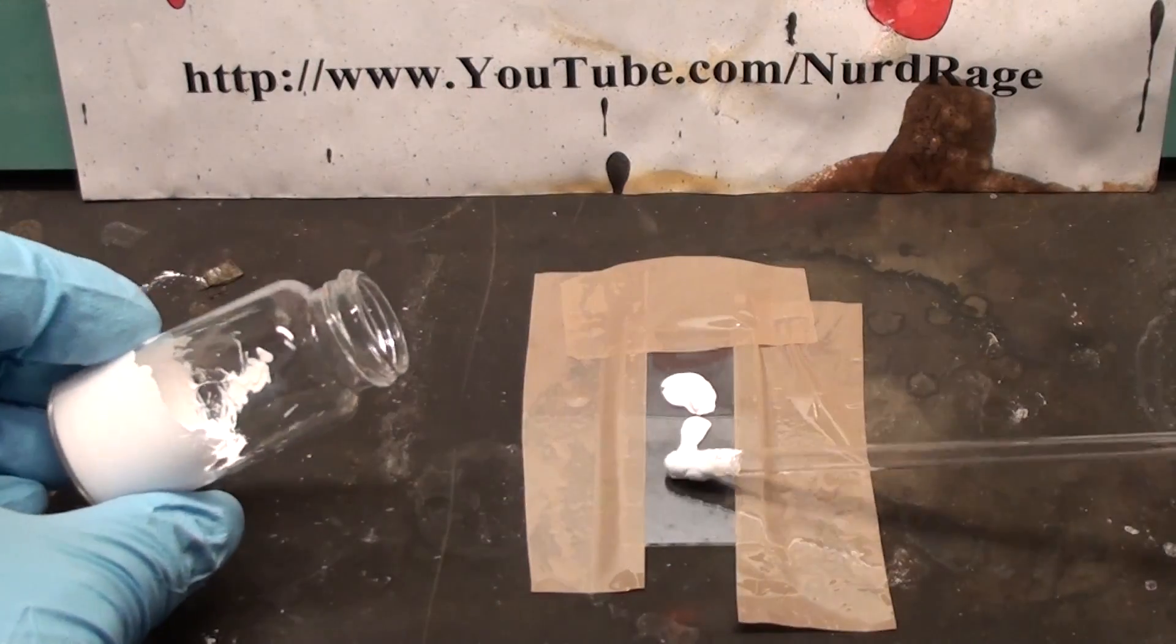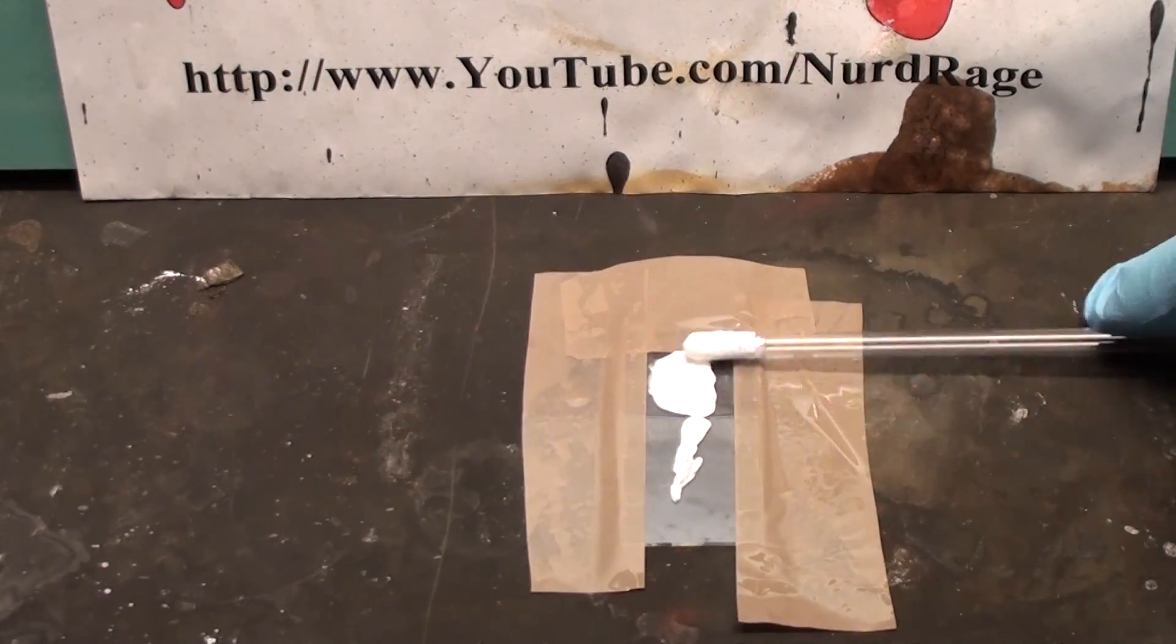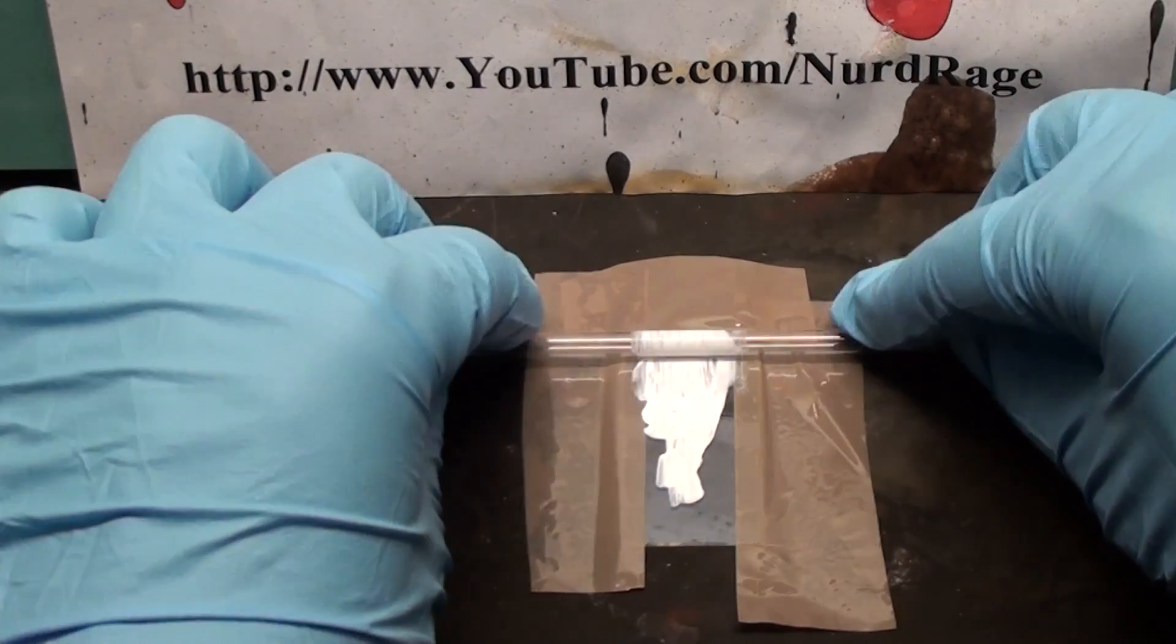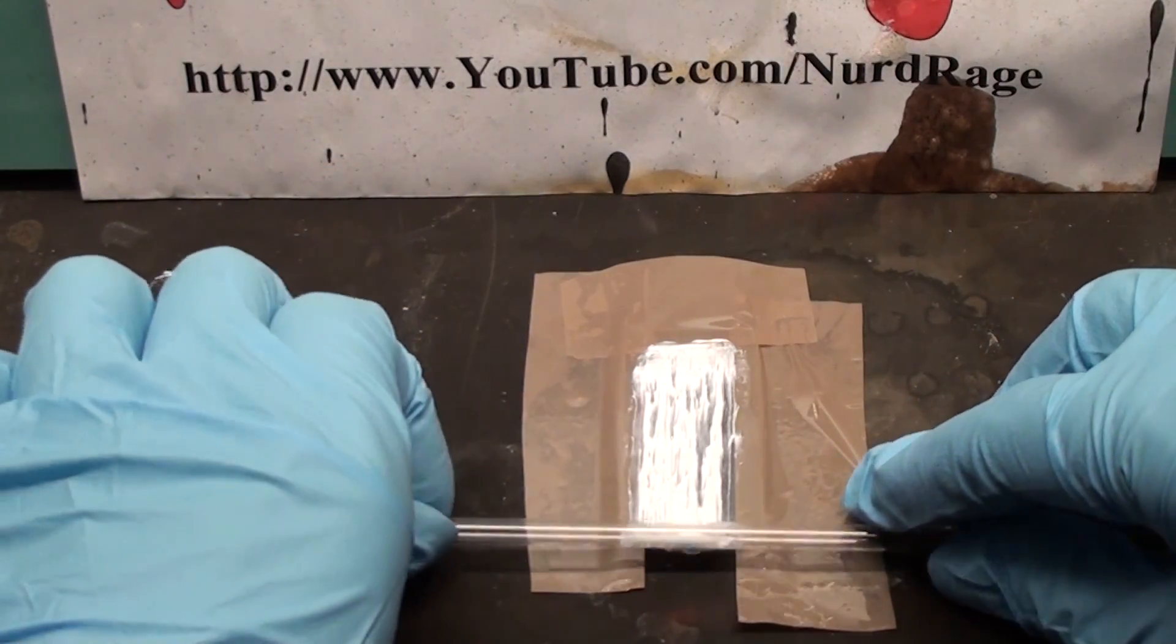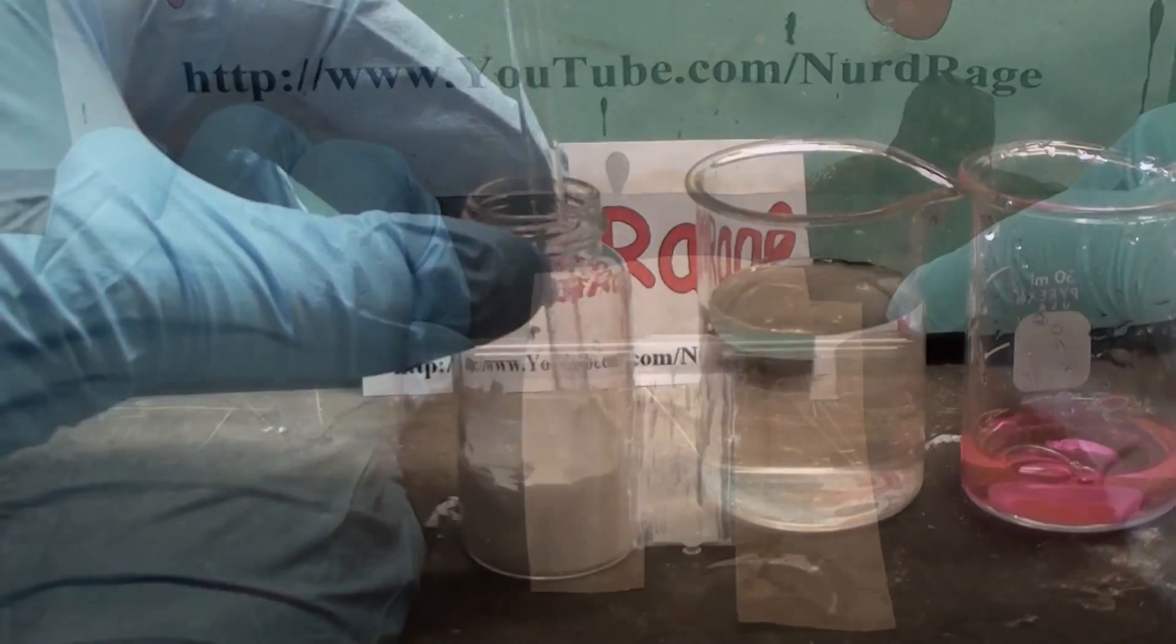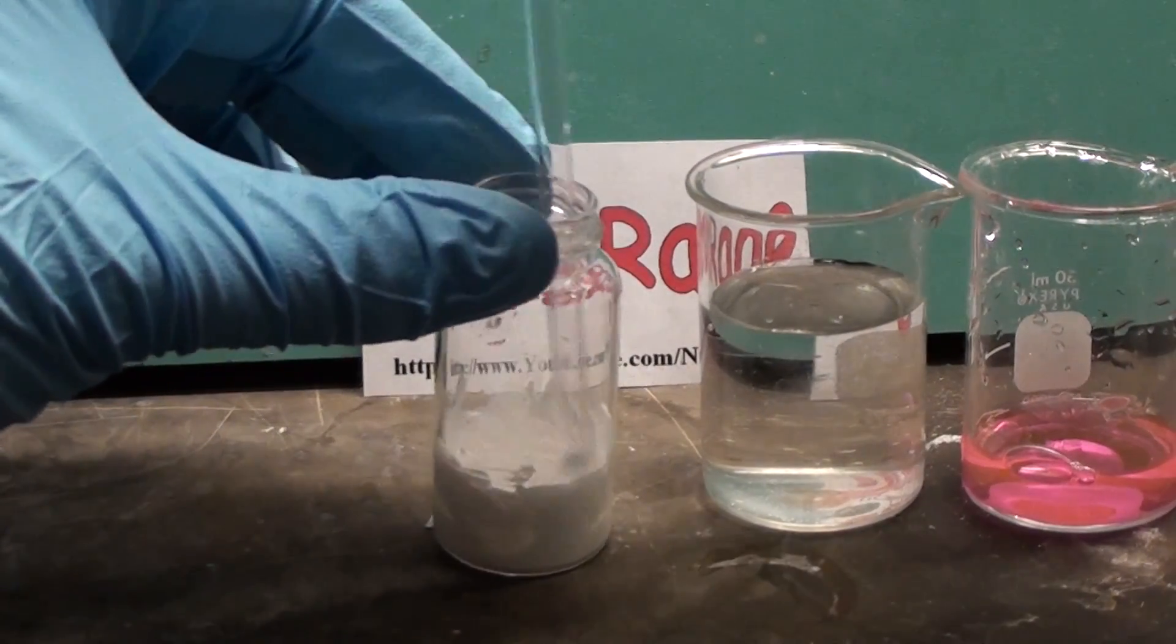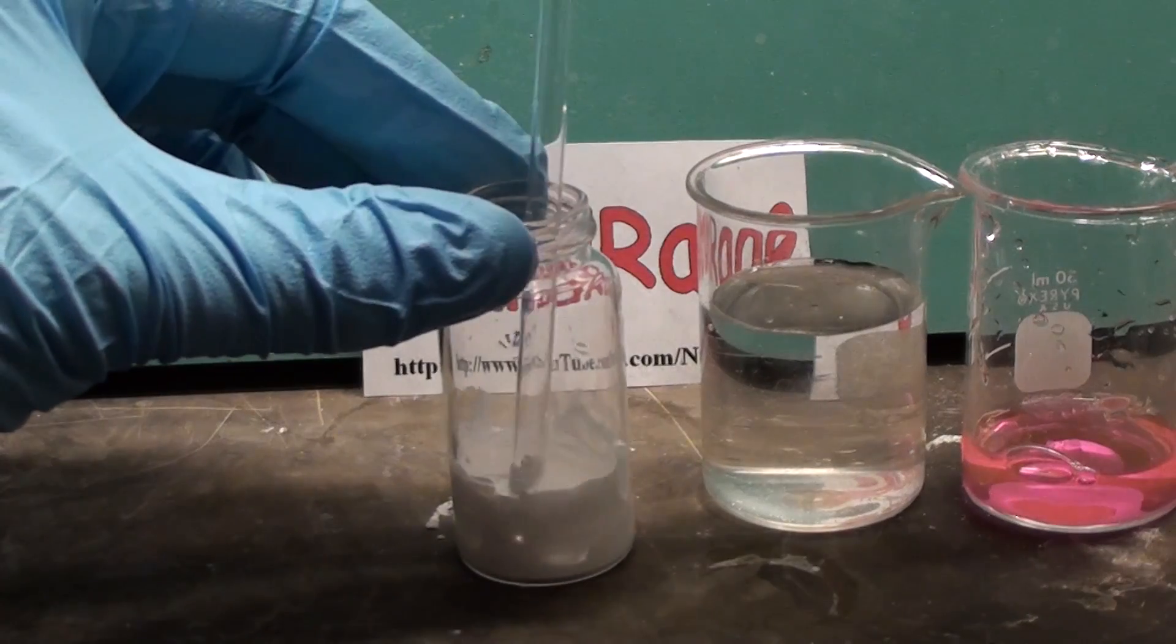Now take the titanium dioxide paste, dab it on and drag a glass rod over to smear it out. It looks like my titanium dioxide doesn't have enough water in it and is leaving these streaks. If this happens to you, add another few drops of water to the titanium dioxide and try again.